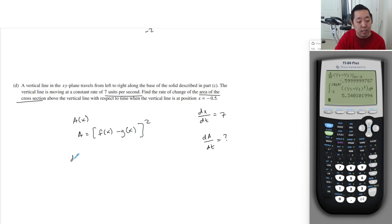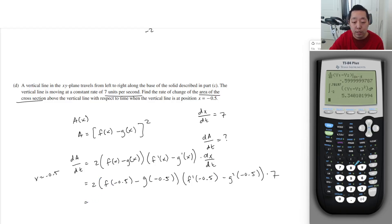dA/dt of both sides would be by power rule two times f of x minus g of x. And then by chain rule, the derivative of this, which would be f prime of x minus g prime of x. And then by chain rule again, there's a dx/dt that pops out because I did the power rule on the outside, chain rule derivative of that guy, then chain rule again times dx/dt. And that's what I want to find. So I want to evaluate this when x equals negative 0.5. It's going to be two times f of negative 0.5 minus g of negative 0.5, times f prime at negative 0.5 minus g prime of negative 0.5, times dx/dt, which is seven. So I just have to put all this into my calculator.